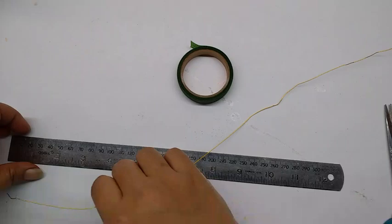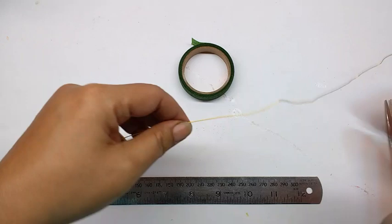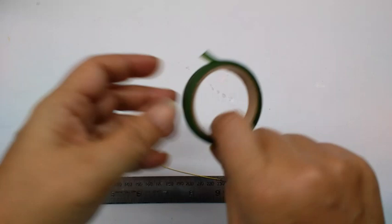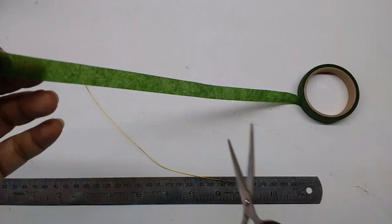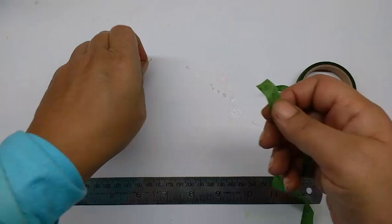First cut about 20cm long thin wire. Then take the green tape, stretch it, and wind it round this whole wire.